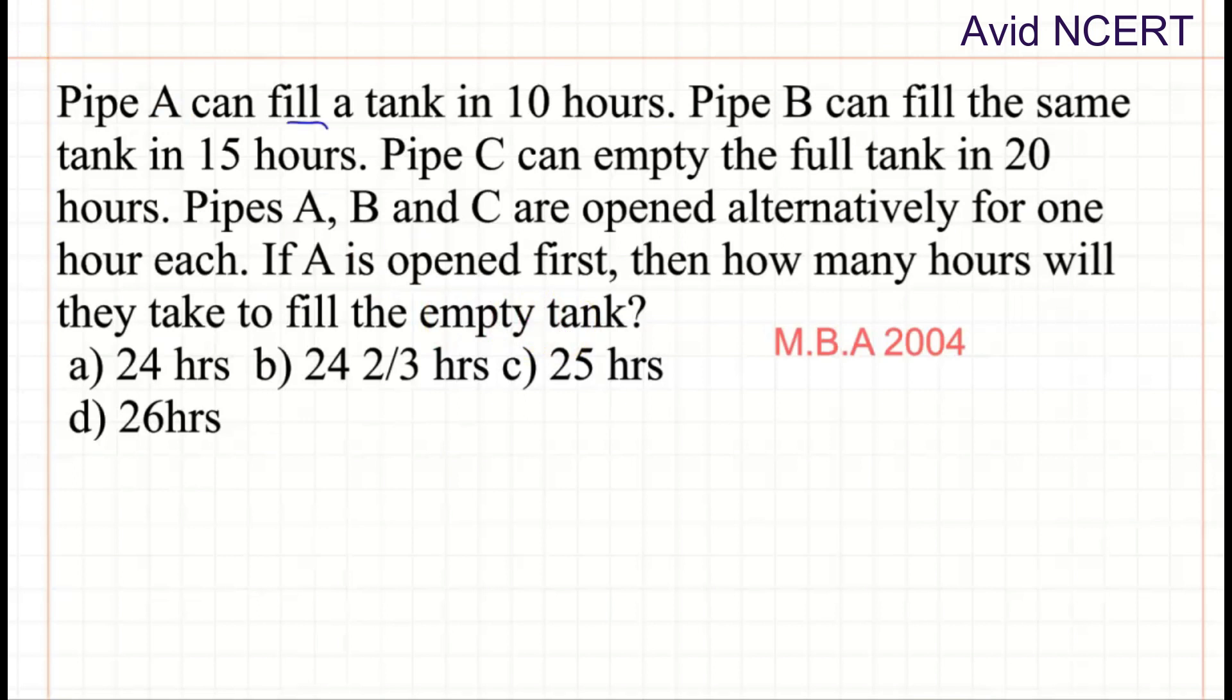From the first sentence, Pipe A can fill a tank in 10 hours, which means Pipe A can fill 1/10 of a tank in 1 hour. So when it is filling, it is positive. From the second sentence, Pipe B can fill the same tank in 15 hours. So Pipe B can fill 1/15 of a tank in 1 hour, which is also positive.